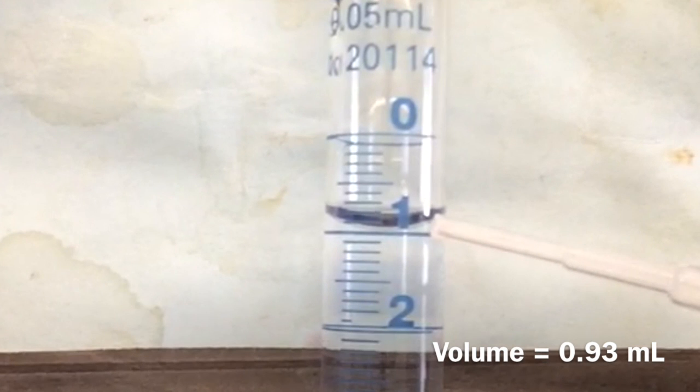Remember to record volume from a burette to two decimal places, so the volume here is approximately 0.93 milliliters.